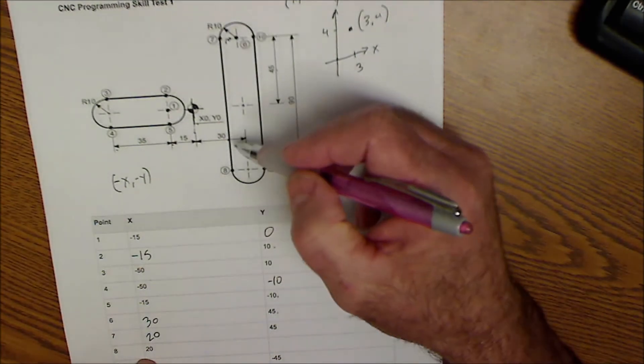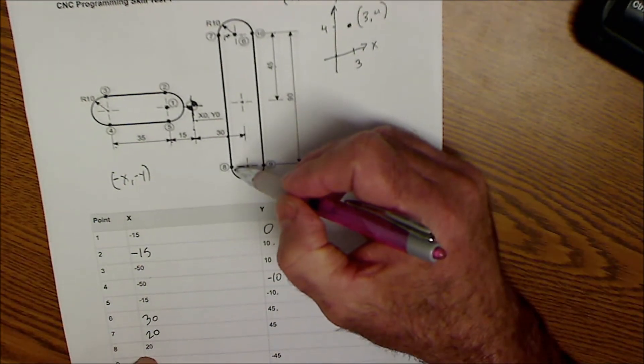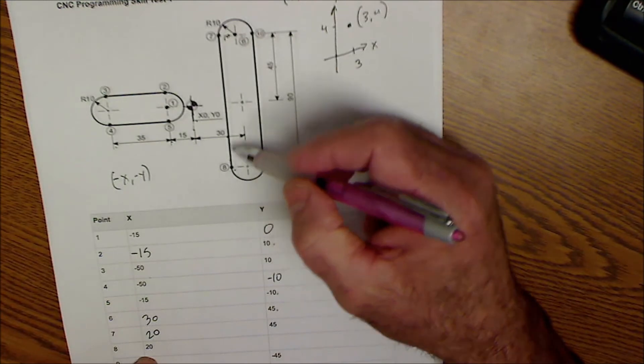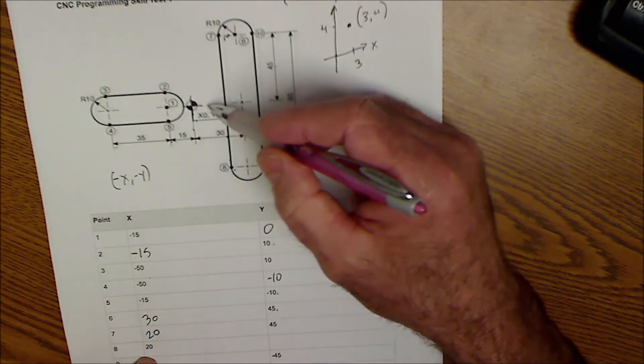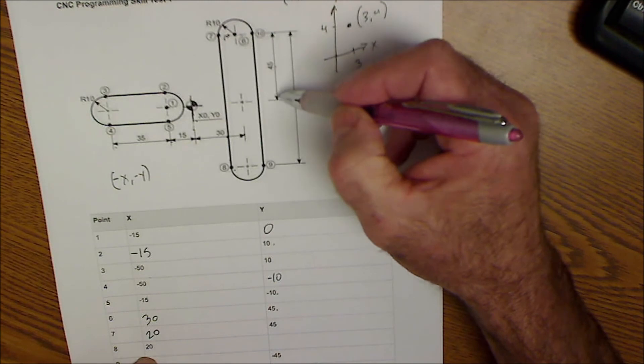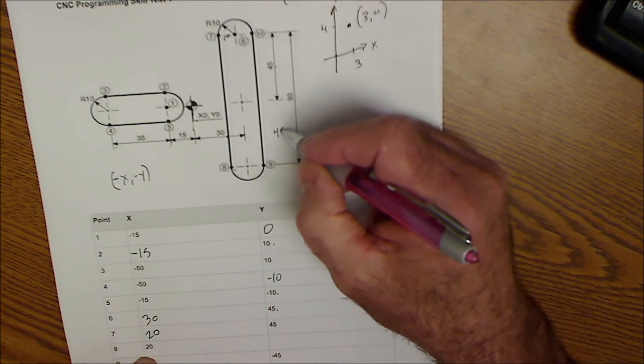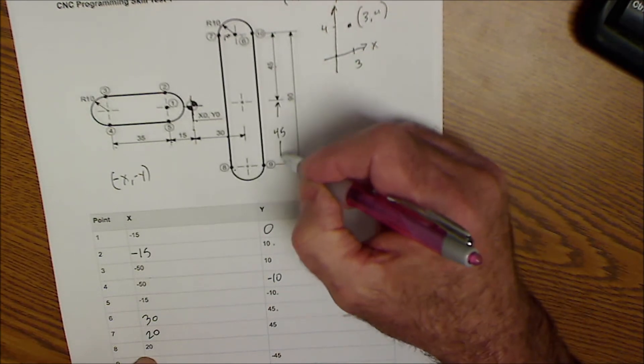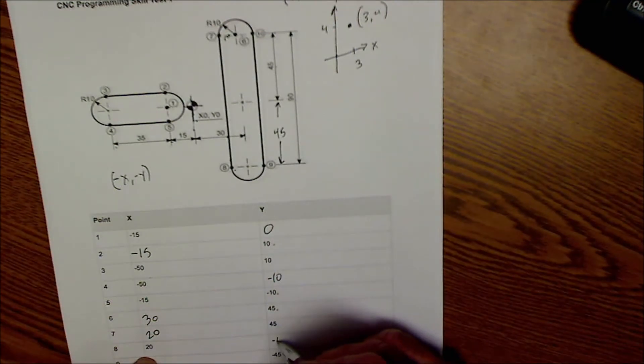Point number eight is the same, over 20, and then it is up from my origin here. If this is 90, this is 45, this is also 45, but it's down 45, so this is negative 45.